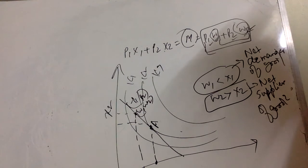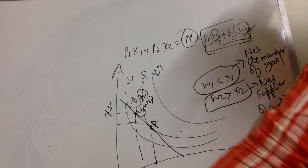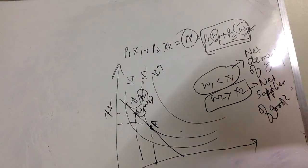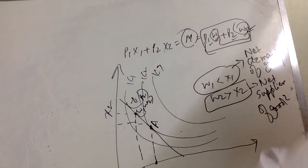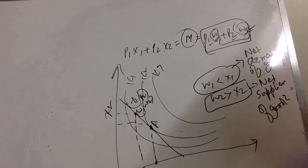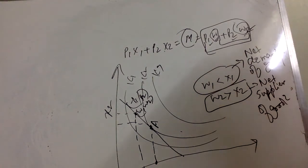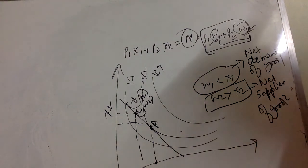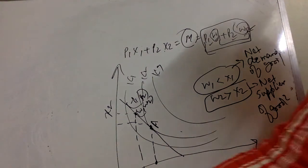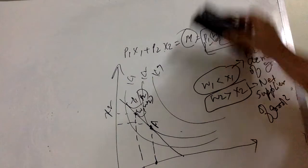Next we discuss the case of changing the endowment. Suppose we have endowment (w1, w2) and now the endowment changes to (w1 prime, w2 prime), which could be higher or lower. We will take both cases.